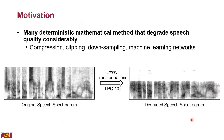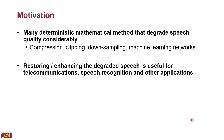Many deterministic mathematical methods are used in speech signal processing, such as compression algorithms, downsampling, and clipping. Also including machine learning networks, such as autoencoders for speech style transformation. All these deterministic mathematical methods degrade the processed speech quality. It is important and needed to restore or enhance the degraded speech for downstream applications, such as speech recognition. Our goal in this paper is to restore the degraded speech from such lossy deterministic transformations.